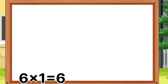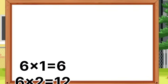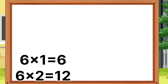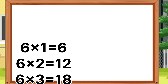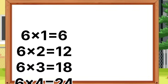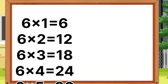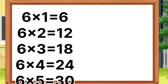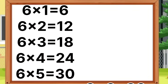One more time. Six ones are six. Six twos are twelve. Six threes are eighteen. Six fours are twenty-four. Six fives are thirty. Six sixes are thirty-six.